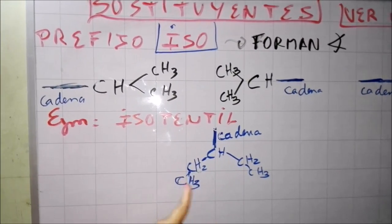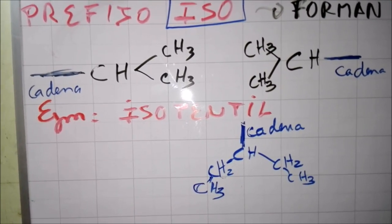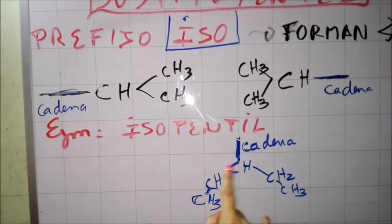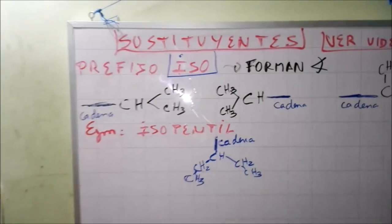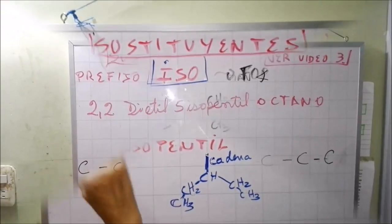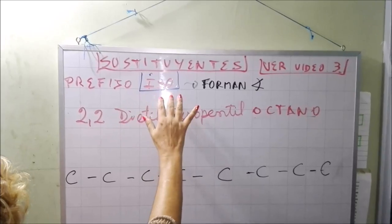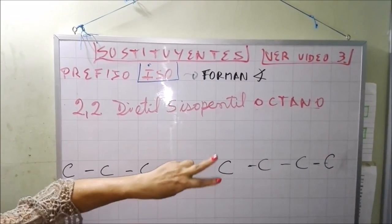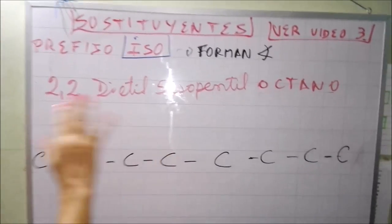Ya en el video anterior habíamos visto de lo que era la clasificación de los hidrocarburos cuando se llama metano, etano, propano, butano, etc. Entonces, como tenemos 5 carbonos, simplemente es pentil. Ahora, teniendo claro esto, voy a hacer dos ejemplos para que no haya ninguna confusión. Como ya explicamos sobre los sustituyentes ISO o prefijo ISO, como se forman, formando ángulos.